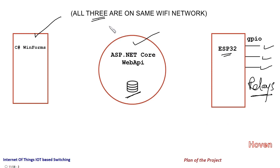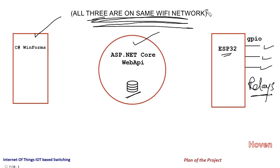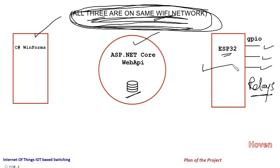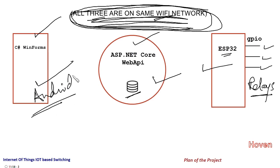The most important requirement in this project is that all three of them have to be on the same Wi-Fi network. This should not be a big problem for a commercial project — for example, one that controls electrical street lights, where government agencies can have a large-scale Wi-Fi network connecting street light modules with an ASP.NET Core server and the WinForms application, or even an Android application, because communication ultimately happens through the Web API.